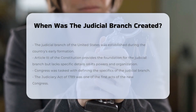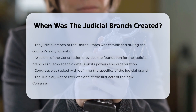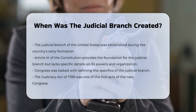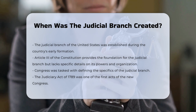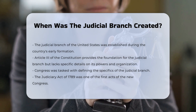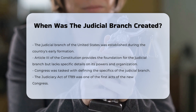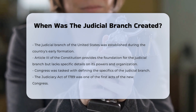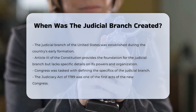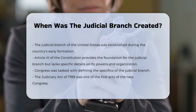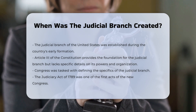The establishment of the Judicial Branch of the United States is rooted in the early days of the country's formation. The Constitution, specifically Article 3, lays the groundwork for the Judicial Branch but does not elaborate on its exact powers or organization. This lack of detail left it to Congress to flesh out the specifics.